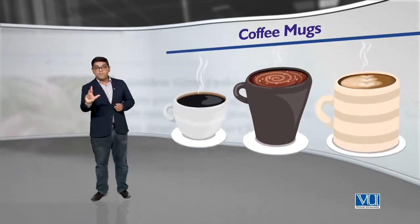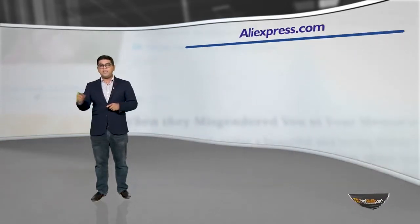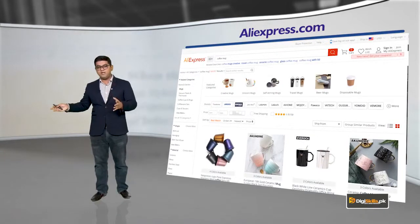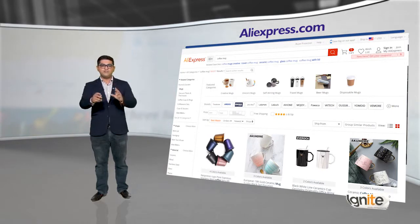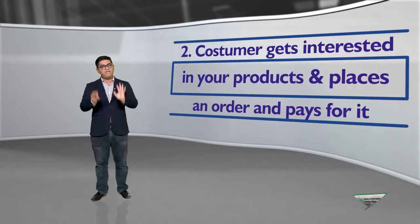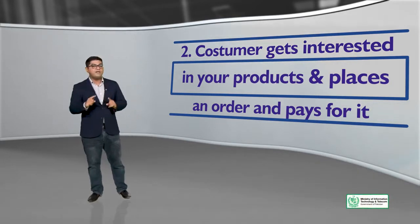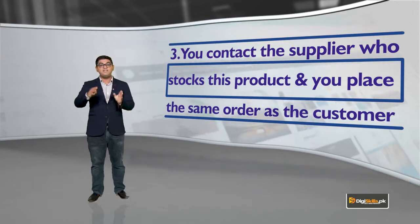Ek simple example lete hai — let's say koi naye tarah ka coffee mug aya. If you want to sell it to your customers, you will go to aliexpress.com and see which coffee mug is being offered. You can take the images and product description. Number 2 step: a customer gets interested in your product, places an order, and pays for it. In this case, the customer has paid you — not the supplier. The customer doesn't even know who the supplier is. The customer places an order and pays you. Number 3 step: you contact the supplier and you place the same order as the customer.